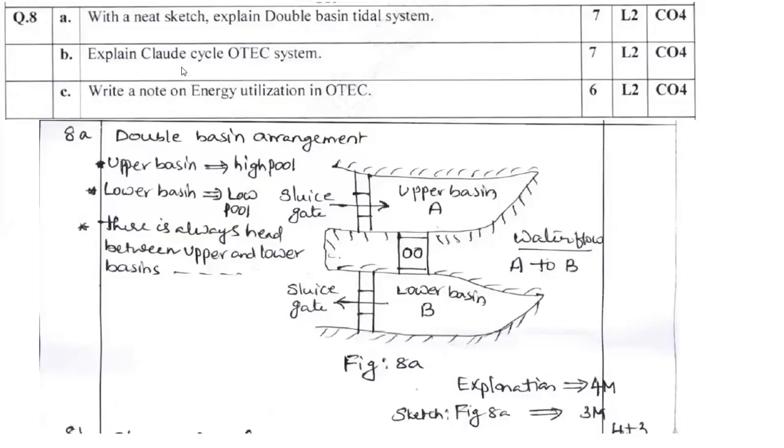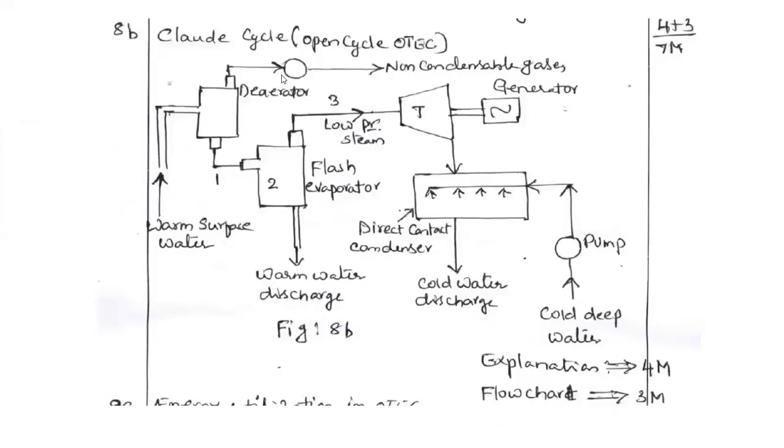Question number 8B. Explain the Claude cycle of ocean thermal energy conversion scheme. I request you to draw the particular block diagram. Later you can give the explanation. Once you can see the warm surface of water, it feeds to the evaporator, then non-condensable gases. Whatever things are obtained that is going to feed to the turbine. Turbine coupled with generator, then there is a condenser. These are the cyclic process. This is called Claude cycle.